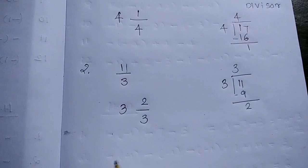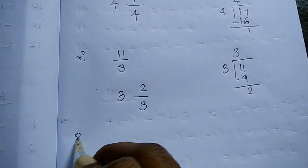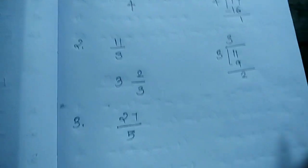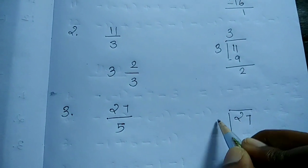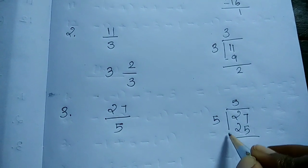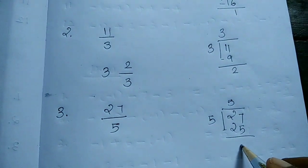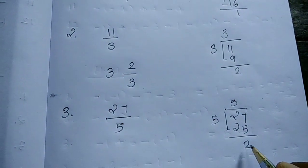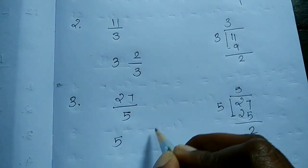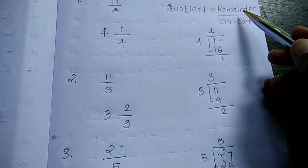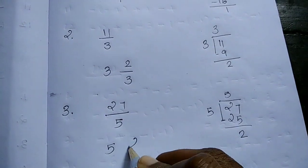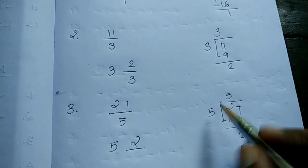Next one: 27 by 5. Divide 27 by 5. 5 fives are 25, then subtract to get remainder 2. Quotient is 5, remainder is 2, divisor is 5. So the mixed fraction of 27 by 5 is 5 and 2/5.